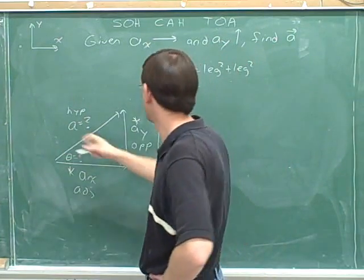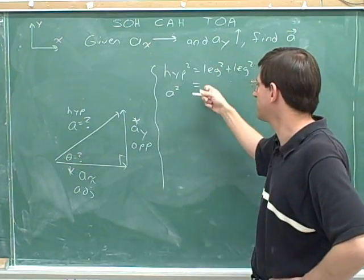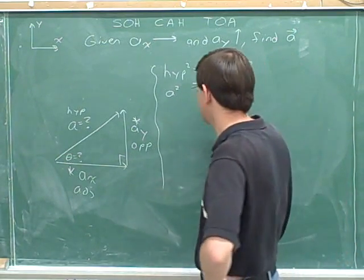Our symbol for the magnitude of the hypotenuse is going to be a. Now what's our symbol for the leg? Well, one leg is a sub x.